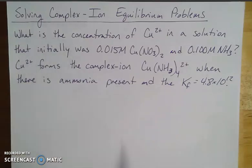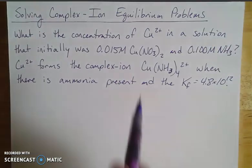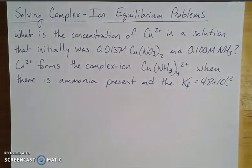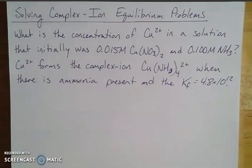We're given that we have a solution that we're starting off making with 0.015 molar copper nitrate and 0.100 molar ammonia. And we're asked to find the concentration of copper ions that are in solution. Okay, so far so good.